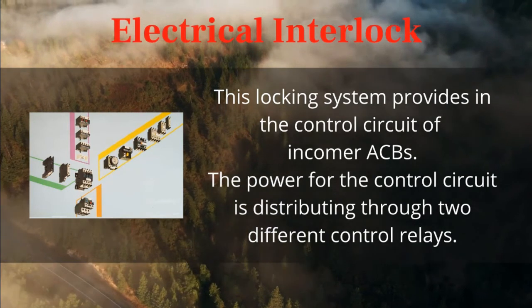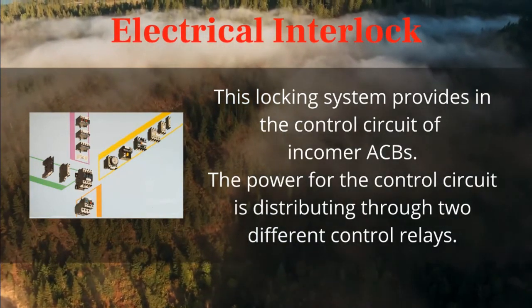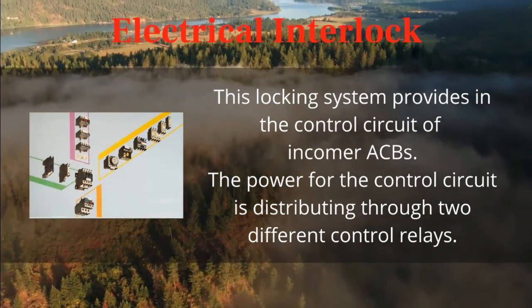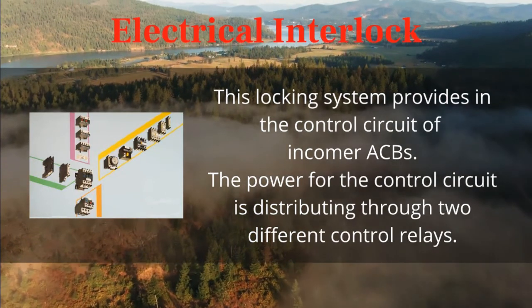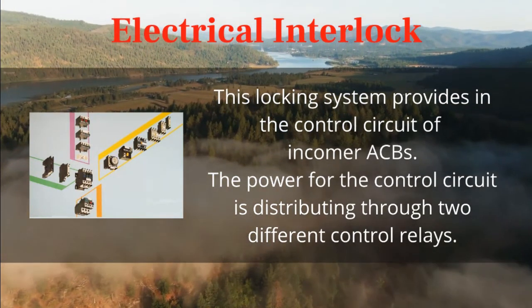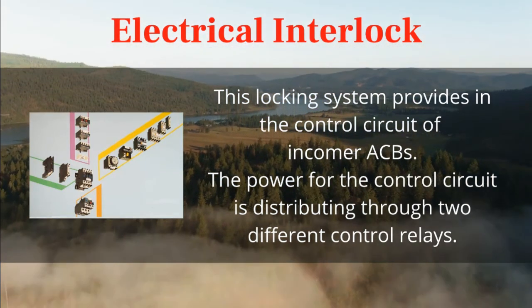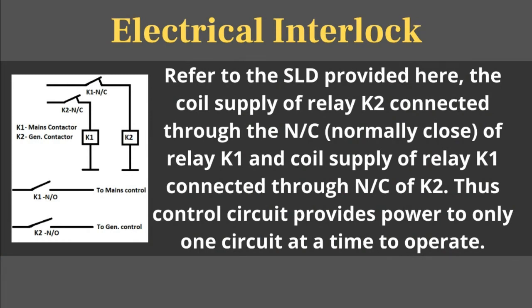Electrical interlock is provided in the control circuit of the incomer ACB. The power for the control circuit is distributed through two different control relays. The coil supply of relay K2 is connected through the NC (normally closed) contact of relay K1, and the coil supply of relay K1 is connected through the NC of K2. Thus the control circuit provides power to only one circuit to operate at a time.